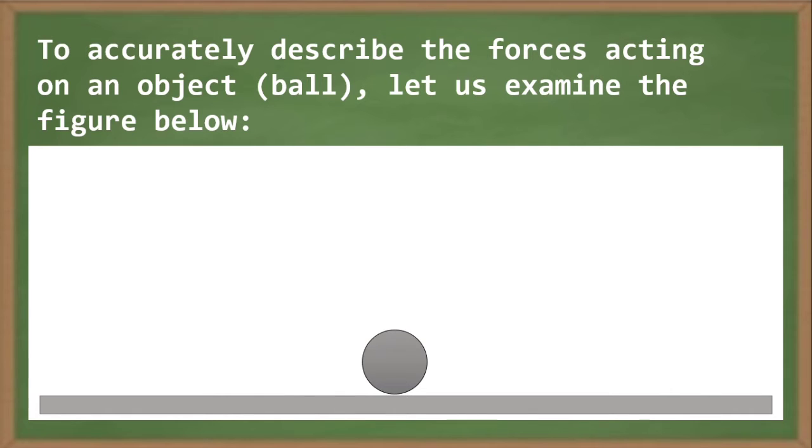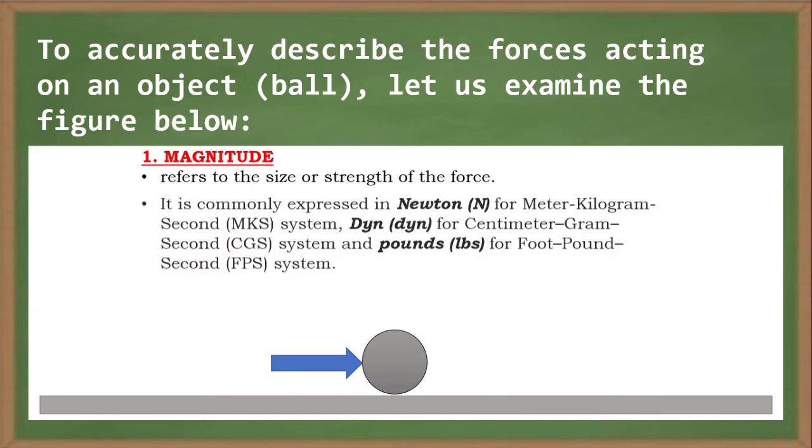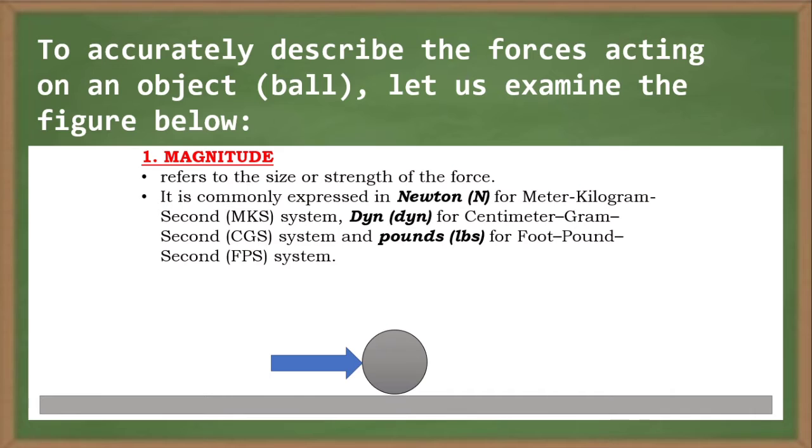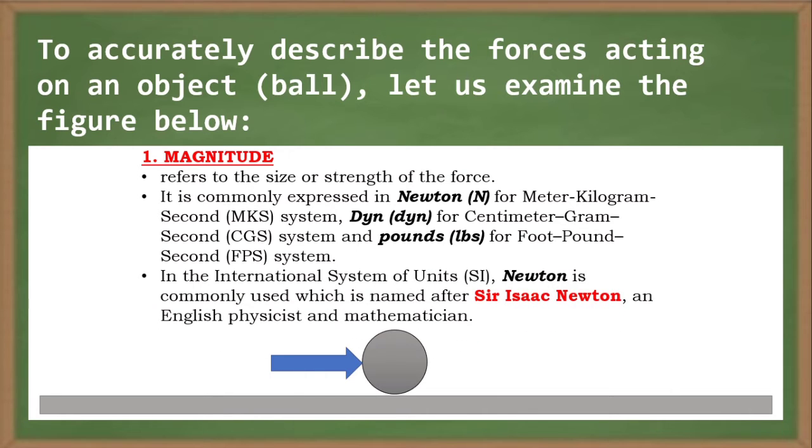To accurately describe the forces acting on an object, let us examine the figure below. One, magnitude. It refers to the size or strength of the force. It is commonly expressed in Newton for meter kilogram second or the MKS system, Dyne for centimeter gram second or the CGS system, and pounds for foot pound second or the FPS system.